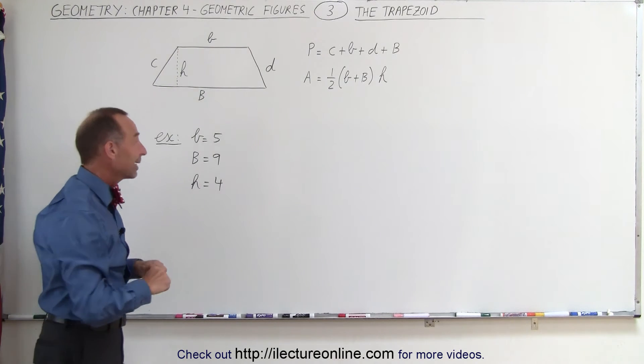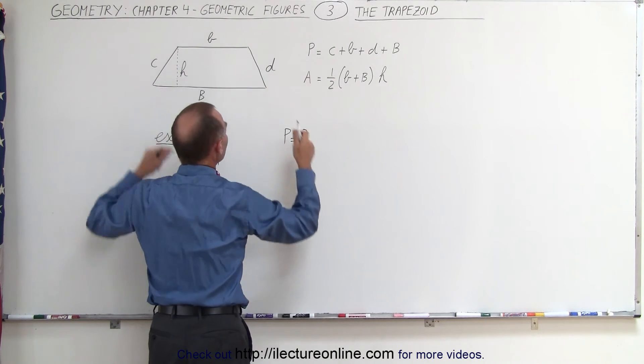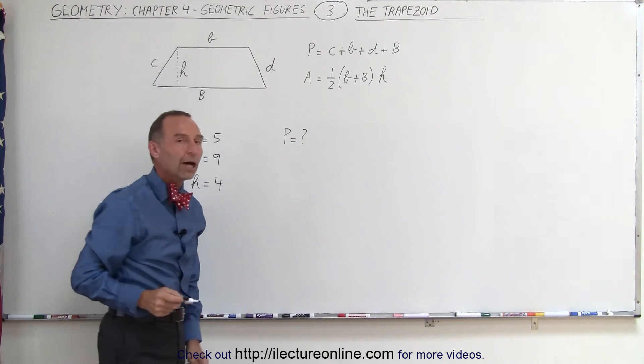Right away you realize that you cannot find the perimeter because you were not given the two sides c and d, so the perimeter will remain unknown.